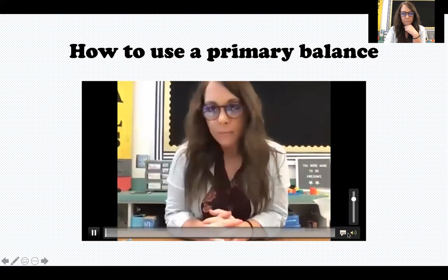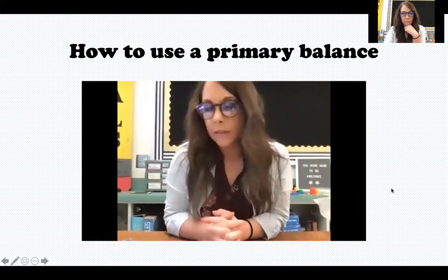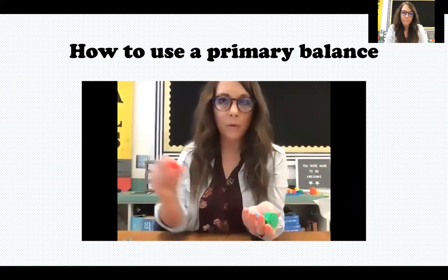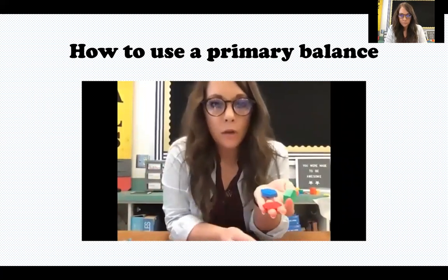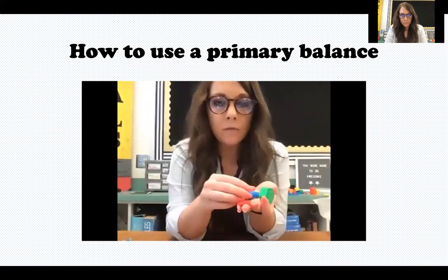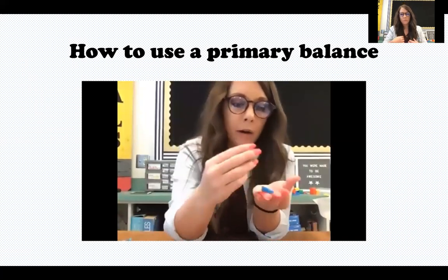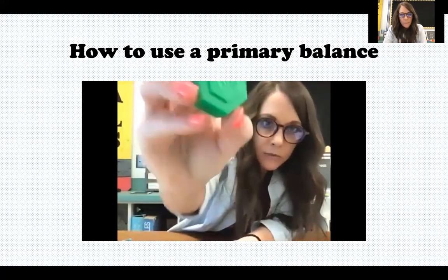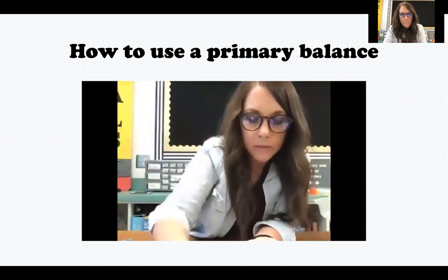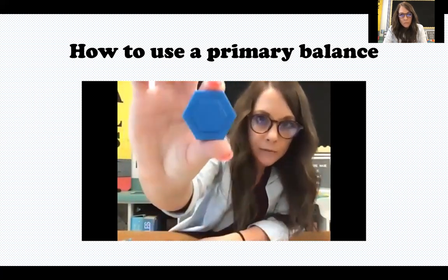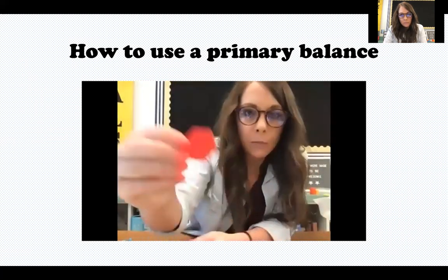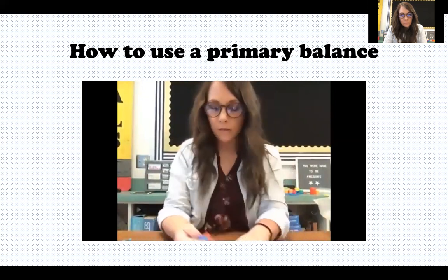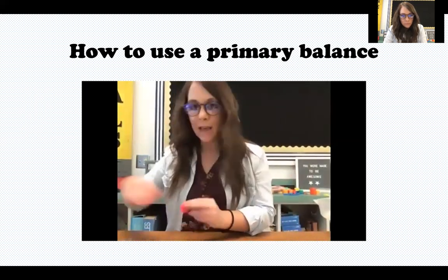To find the mass of an object using a primary balance, you need gram weights. When we measure mass, the unit we use is grams, so each of these represents a different amount of grams. This one says 10 grams — this gram weight represents 10 grams. The blue one represents 5 grams, and the red one is 1 gram. In order to use the primary balance, you have to have gram weights.